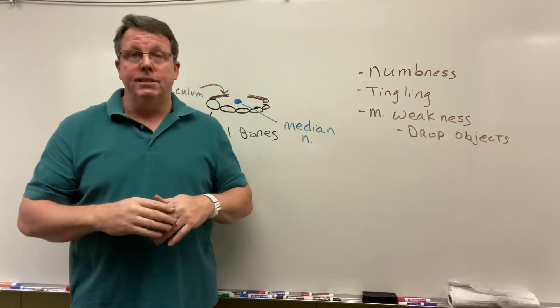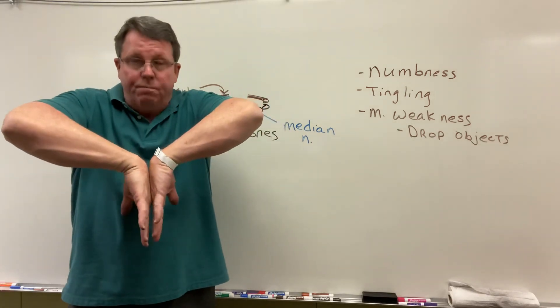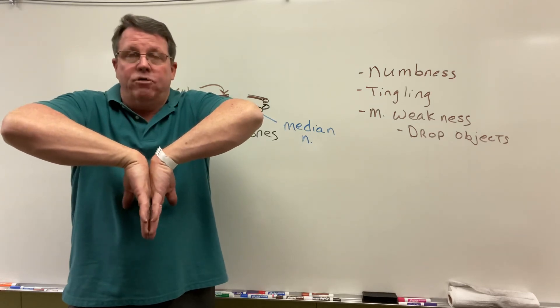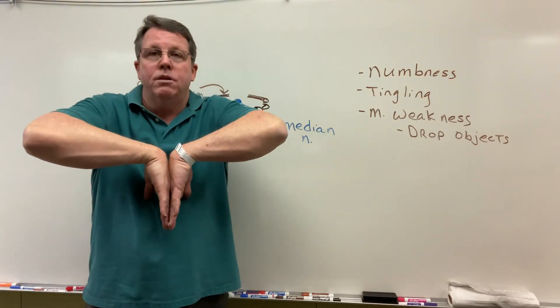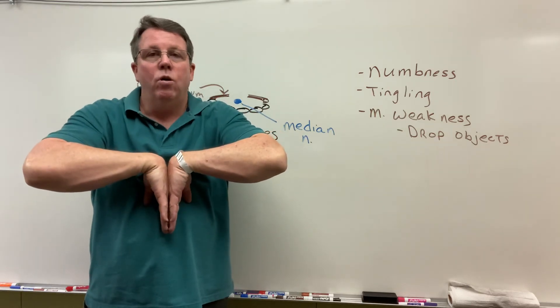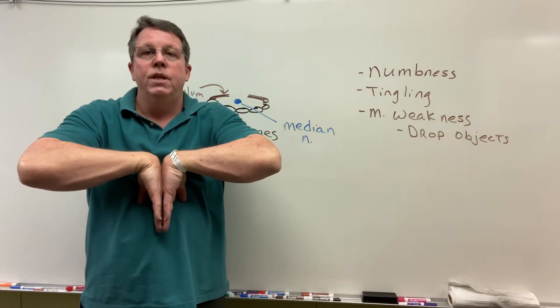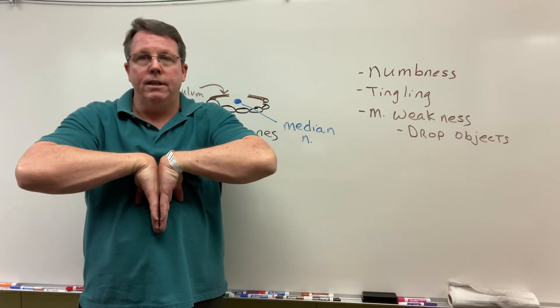The other one is called Phalen sign. For Phalen sign, you put the back of the hands together and the fingers together. If you notice, my elbows are up. You let the elbows come down, hold it for about 30 seconds or so, and see if you can feel any tingling in the hands also.